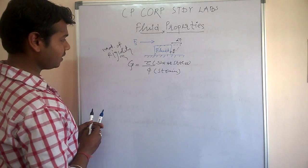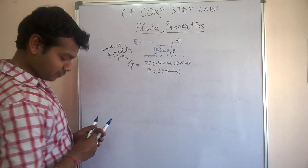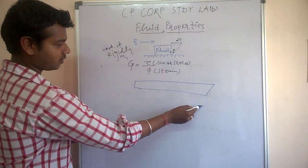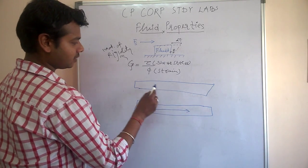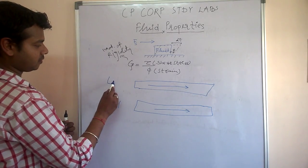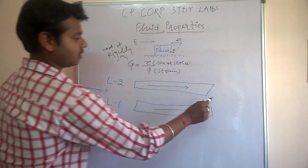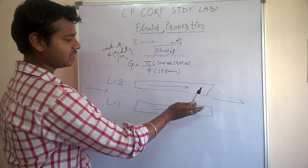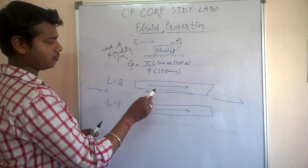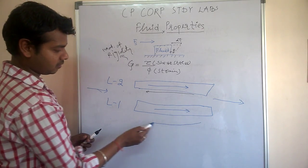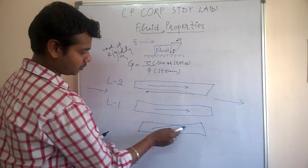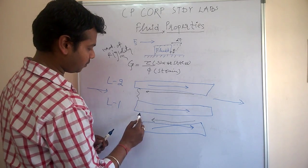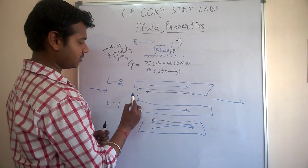The next most important thing in fluid properties is viscosity. Suppose when a liquid is undergoing some flow, there are layers — layer one, layer two. When a fluid is moving in one direction, what happens between the two layers is that they try to oppose each other. If one layer is moving in one direction, it will oppose the motion of the next layer, trying to bring it to rest. This property of one layer resisting another is termed viscosity.